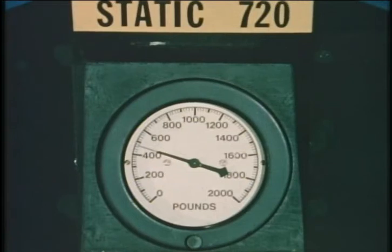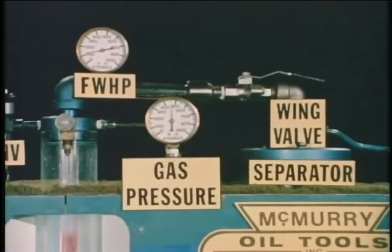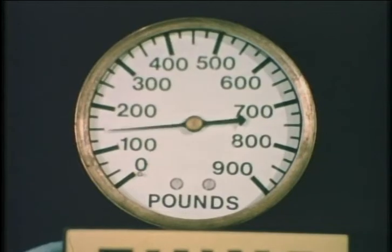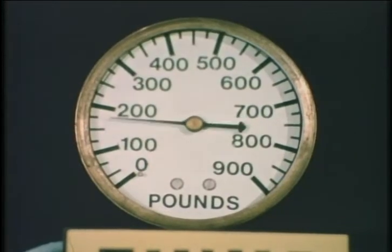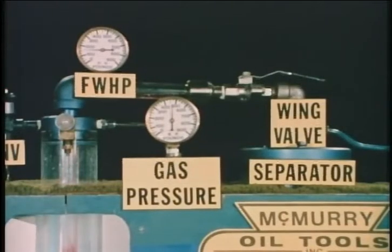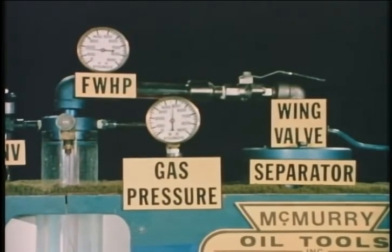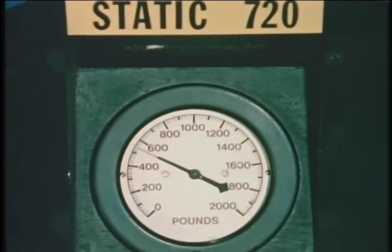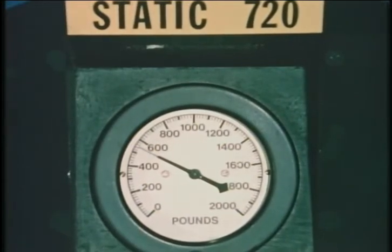But why didn't the flowing bottom hole pressure change? After all, the additional gas means a decreased pressure gradient in the tubing. The answer lies in the flowing wellhead pressure, which increased from 120 to 170 psi. The additional gas causes a higher pressure loss in the surface flow line to the separator, and this surface pressure increase counterbalances the reduced pressure gradient in the tubing. Even further gas injection beyond a certain point can cause an increased pressure loss in the tubing and cause the flowing bottom hole pressure to increase to 560 psi, as you see here.